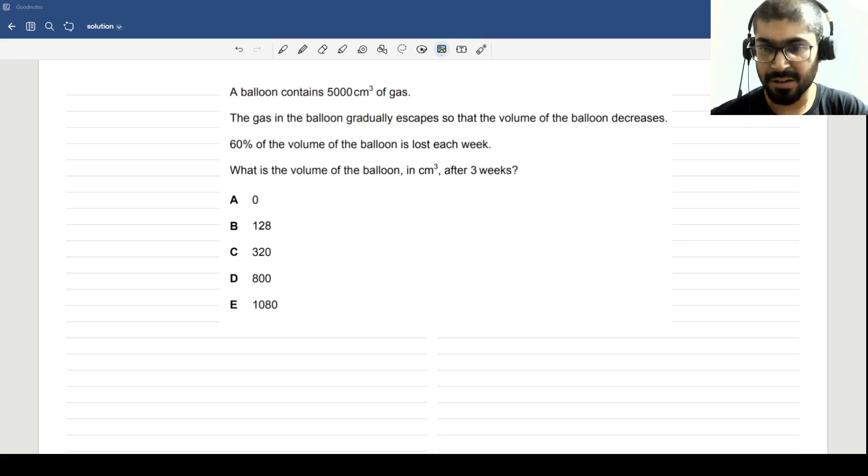The first one says a balloon contains 5000 cm³ of gas. The gas in the balloon gradually escapes so that the volume of the balloon decreases. The key information is that 60% of the volume is lost each week. If it was 100, it would be 40 next. Be very aware: 60% is lost, so if you lose 60 you are left with 40.